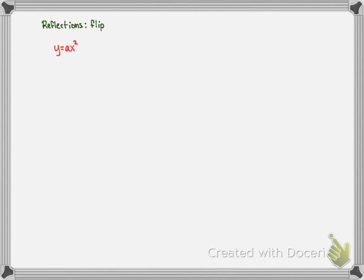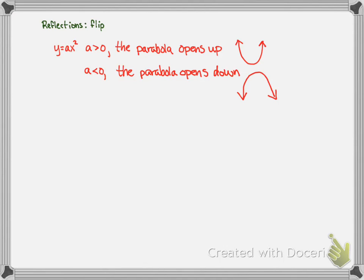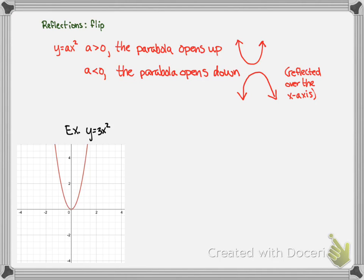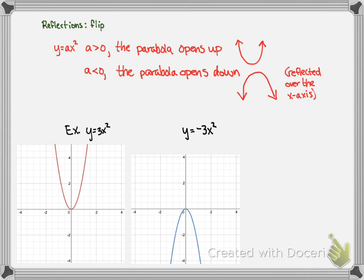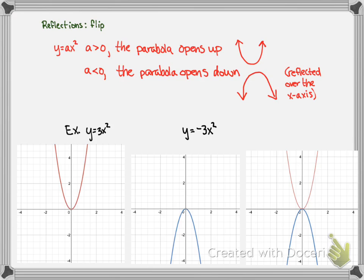Reflections — in other words, flipping. y equals ax squared: when a is greater than 0, the parabola opens up like a U. When a is less than 0, the parabola opens down — in other words, it's reflected over the x-axis. For example, y equals 3x squared — this is our graph, which is our parent function stretched vertically. And then y equals negative 3x squared is reflected over the x-axis. On the same graph, you can see that they are clearly reflections of each other.